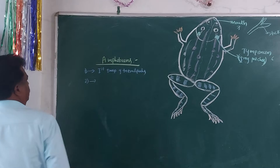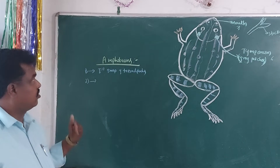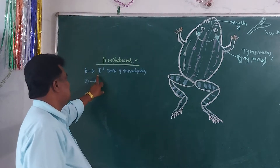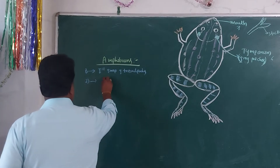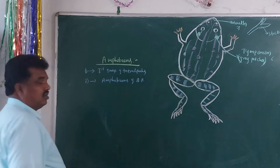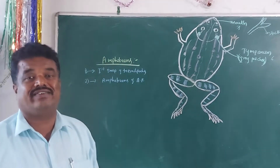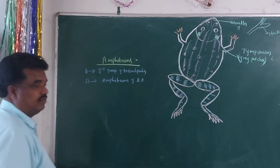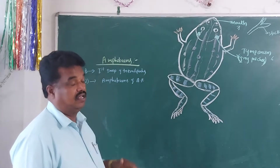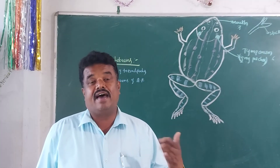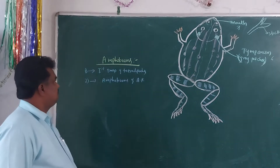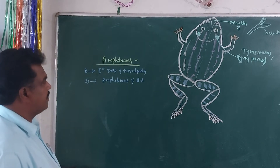These are commonly called amphibians of the animal kingdom. It is because they are adapted to both terrestrial conditions as well as aquatic conditions. Hence these are generally called as amphibians of the animal kingdom.